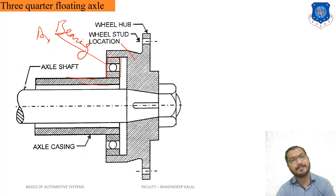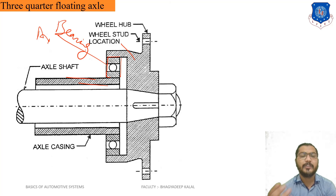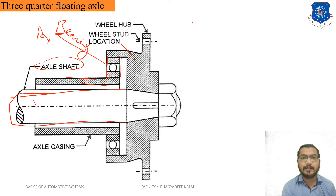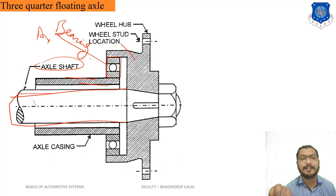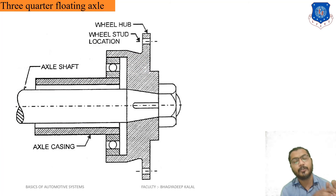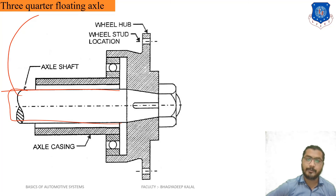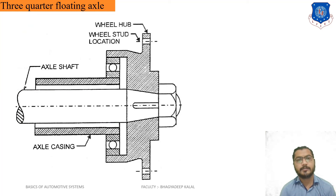In three-quarter floating axles, bending load and shearing load are not taken by the axle shaft. The vehicle weight, bending force, and shear loads are directly taken by the axle casing and transferred to the wheel. Only one type of load — the driving torque — is taken by the axle shaft. This is different from semi-floating, where all loads come through the axle shaft.